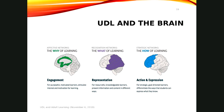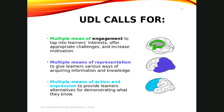The green area of your brain at the centre is the multiple means of engagement — the way to tap into interest, offer challenges, and increase motivation. The purple area, the front half of the brain, is the multiple means of representation to give learners various ways to acquire information or knowledge. And the multiple means of action and expression on the back end: you're trying to provide learners with alternatives for demonstrating what they know. What I have done in this presentation is given you different ways of representing information — this slide that I just flipped through is the same information, shown differently, with a little bit of a different description.